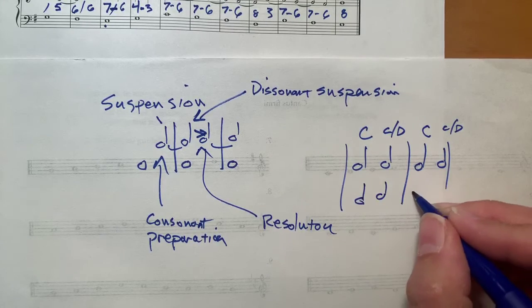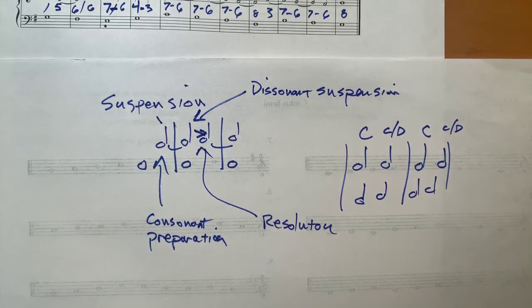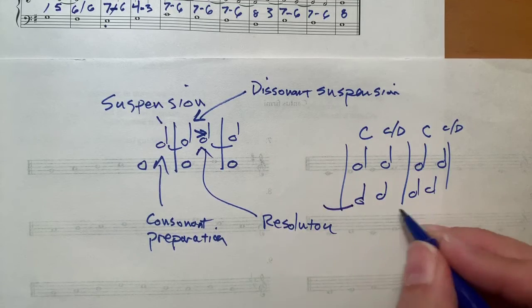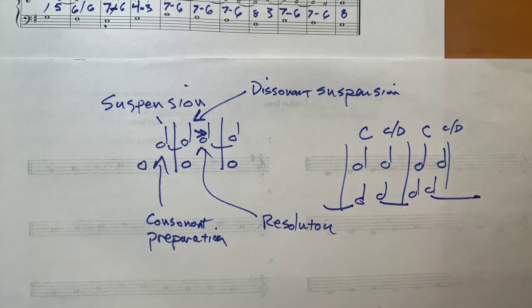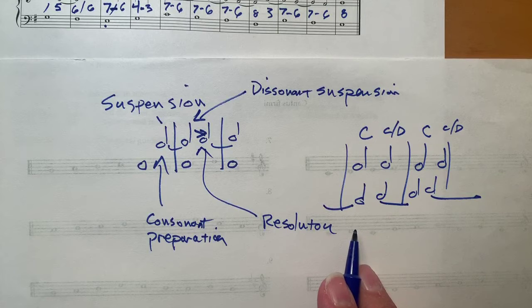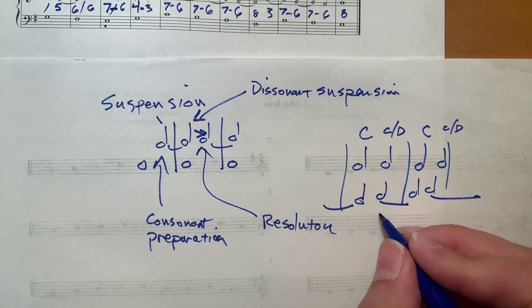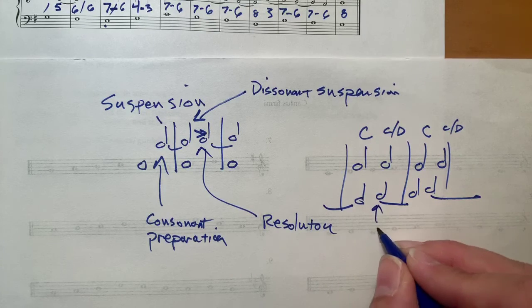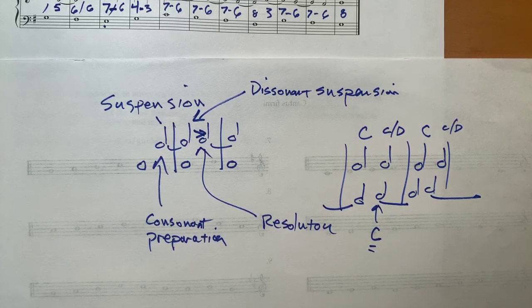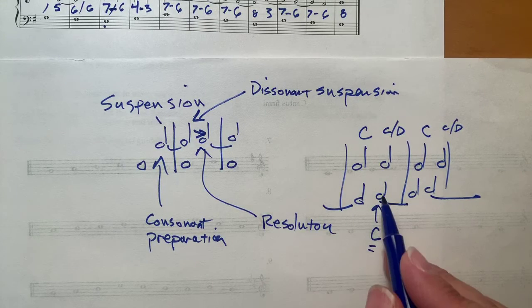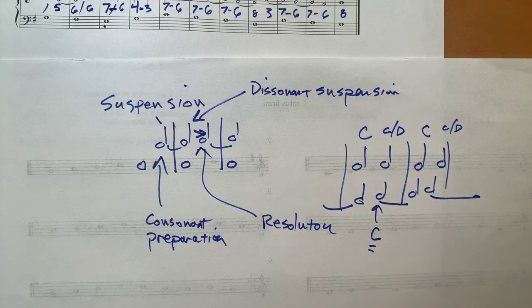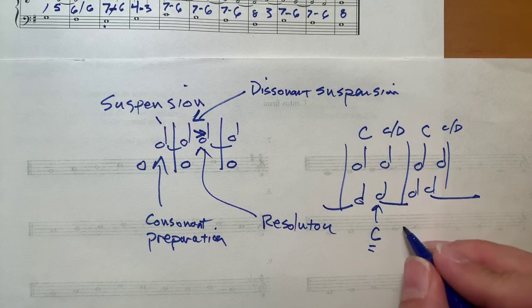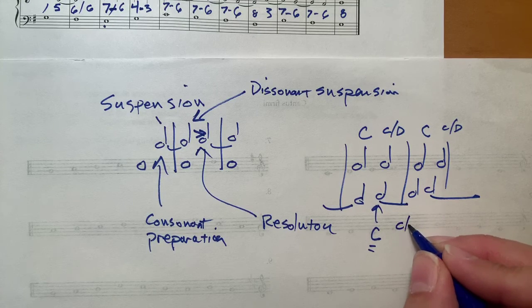Now, suspensions basically flip this around. In suspensions, in fourth species, the weak beat must be consonant, and then that beat must tie over to the next measure. This note can be either consonant or dissonant.